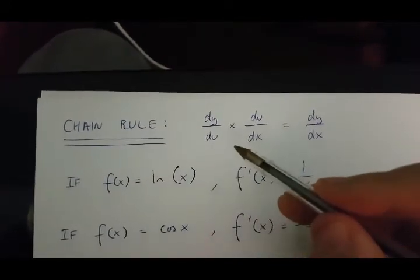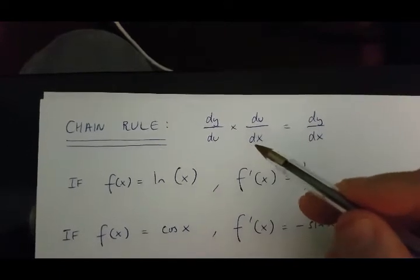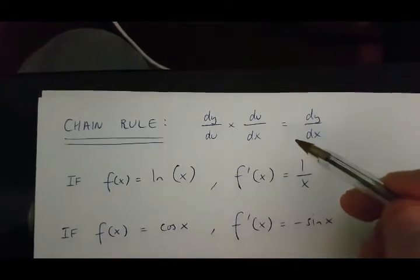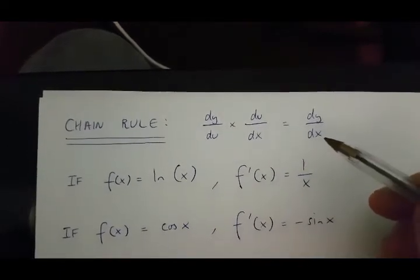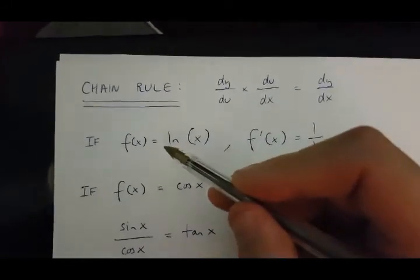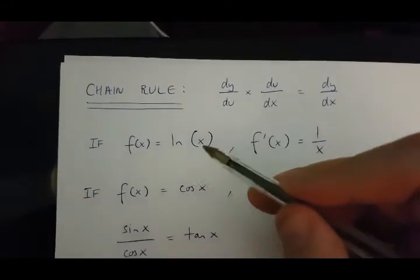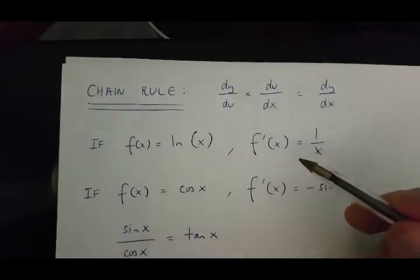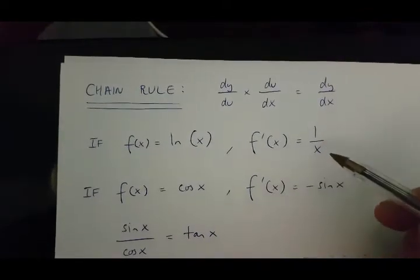That is dy over du times du over dx equals dy over dx. Also, if function of x equals ln x, then its derivative is 1 over x.